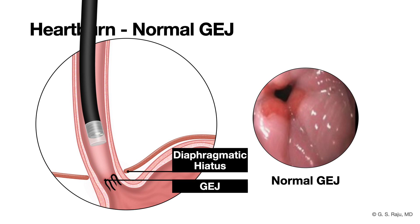Endoscopy is crucial because we can actually look at that GE junction and look for that diaphragmatic pinch. As you're putting the scope down towards the stomach, you'll see this circular squeeze that tightens and loosens with every breath the patient takes. That's the diaphragmatic crura — the muscle ring squeezing as it moves. It's a really clear marker showing you exactly where the diaphragm is crossing the esophagus.